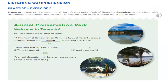Acá tenemos otra comprensión de lectura. Tenemos que completar esos espacios que están en blanco. Listening comprehension, practice exercise number three: listen to a conversation about the animal conservation park of Tarapoto. Complete a brochure with the correct information. Escucha una conversación acerca del parque de conservación de animales de Tarapoto. Completa el folleto con la correcta información. Tú vas a escuchar la conversación dos veces. El número uno ya es el ejemplo. Vamos a escuchar.